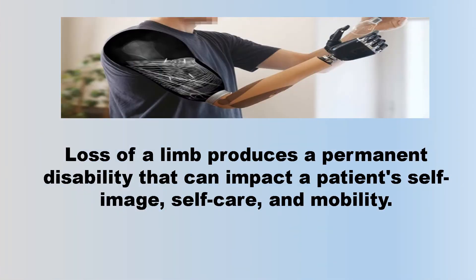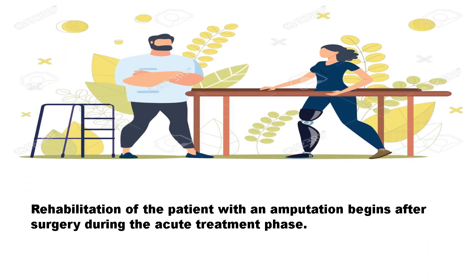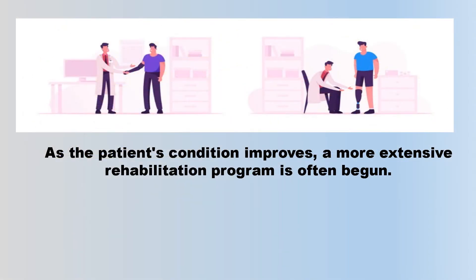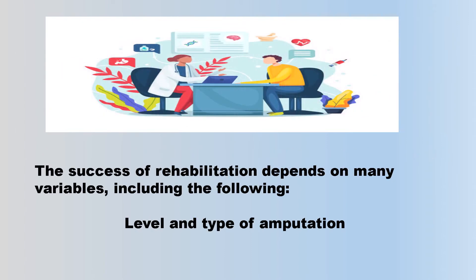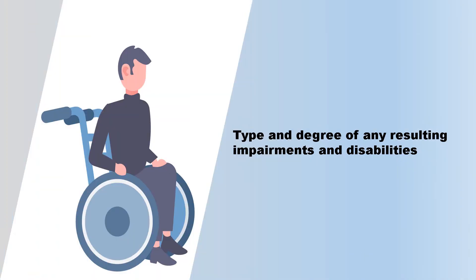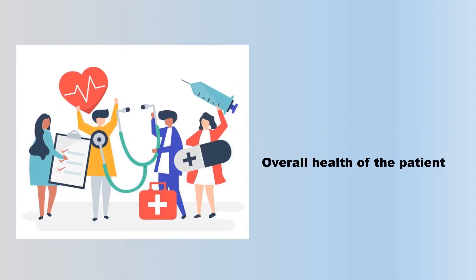Loss of a limb produces a permanent disability that can impact a patient's self-image, self-care, and mobility. Rehabilitation begins after surgery during the acute treatment phase. As the patient's condition improves, a more extensive rehabilitation program is often begun. The success of rehabilitation depends on many variables, including the level and type of amputation, the type and degree of any resulting impairments and disabilities, and the overall health of the patient.